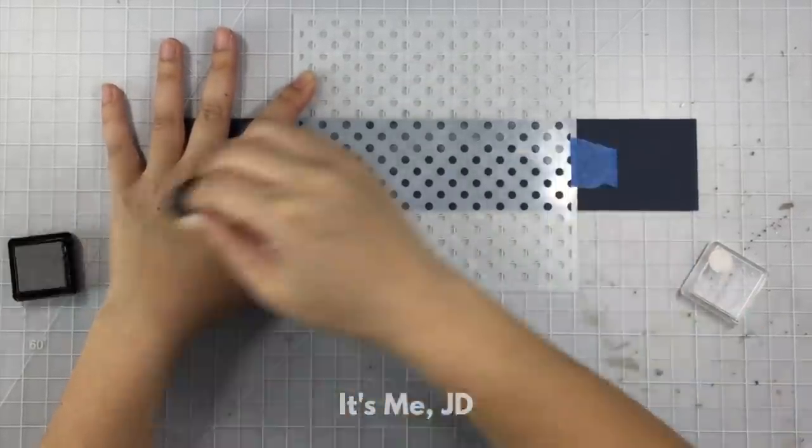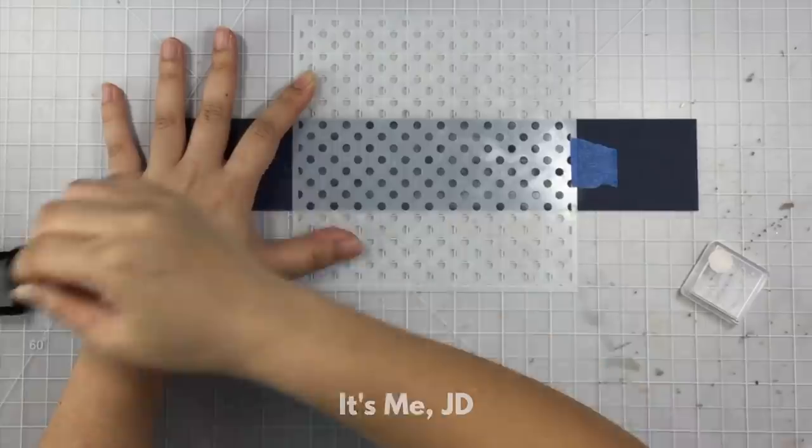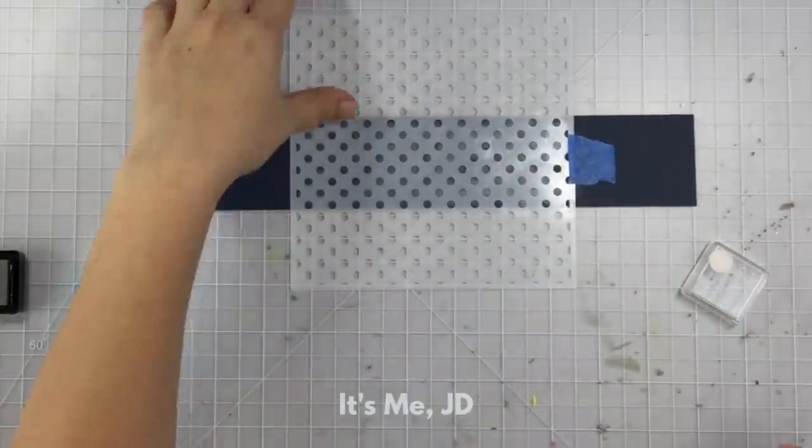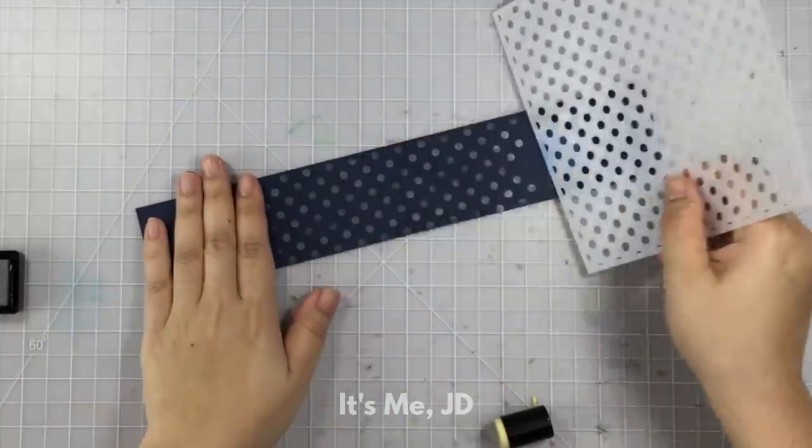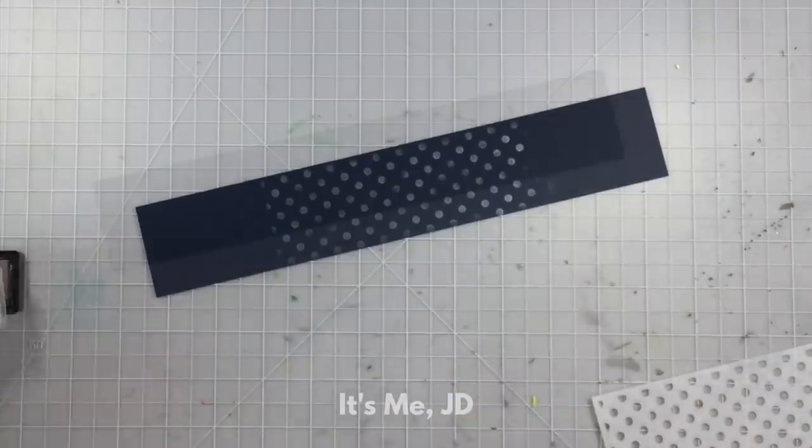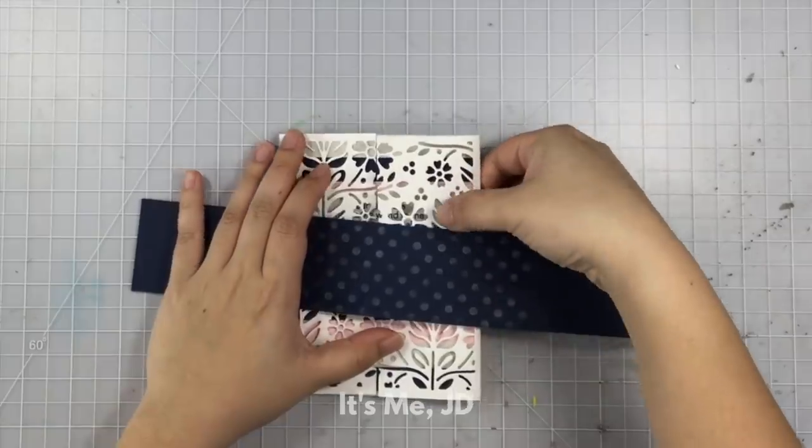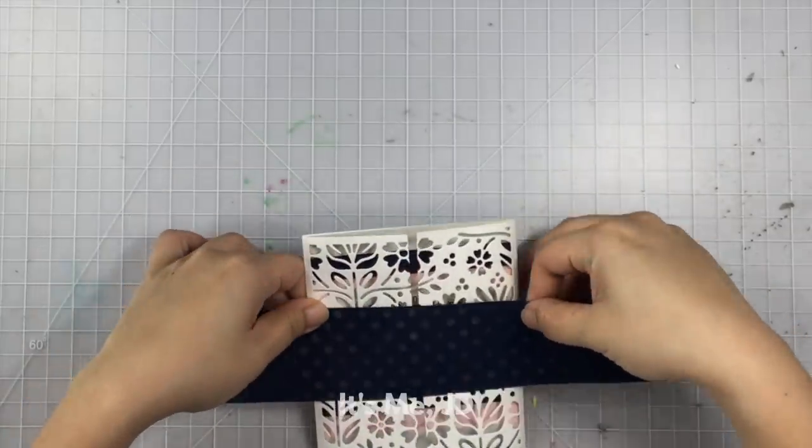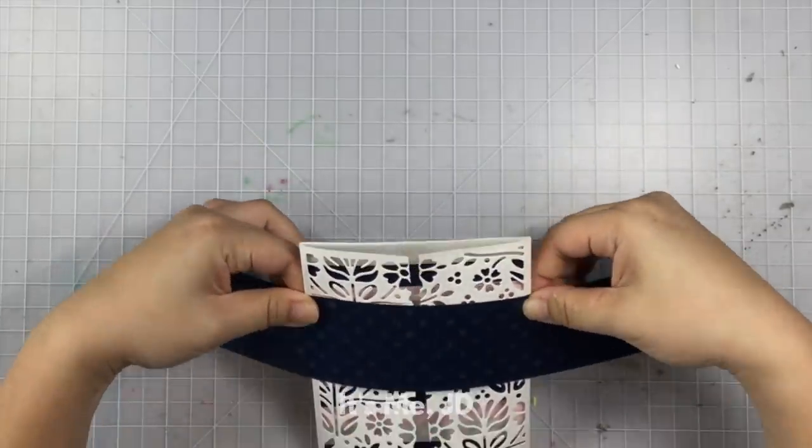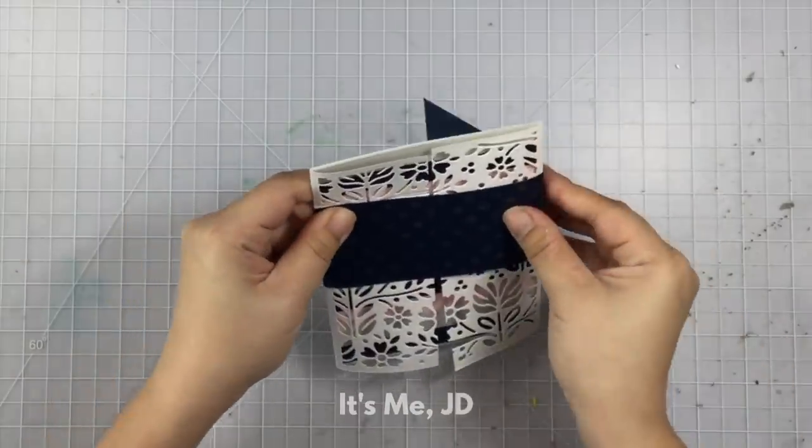I did want to add some interest by just using a stencil and sponging on some metallic ink on it just to make it a little extra special. For any paper belly band you want to make sure that you're using a nice quality cardstock that's going to be sturdy enough to hold the card together and not fall apart when your recipient tries to remove it.